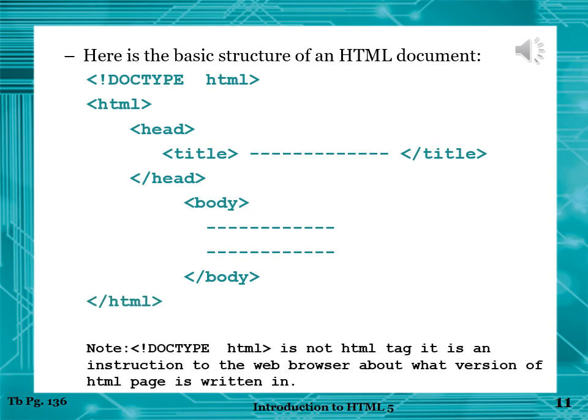Here is the basic structure of an HTML document — just like you have a letter format or application format, we have the HTML program format. The DOCTYPE tag is basically an instruction to the web browser indicating which version of HTML is used — here we are using HTML5. We have HTML tags with two portions inside: head and body. Whatever we write in the title will be displayed in the title bar of the web browser, and whatever we write in the body will be displayed in the body of the web browser.